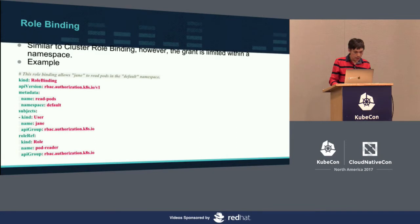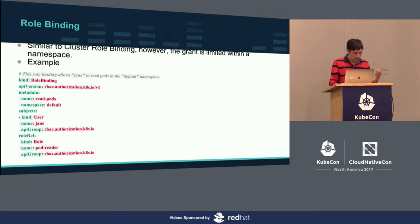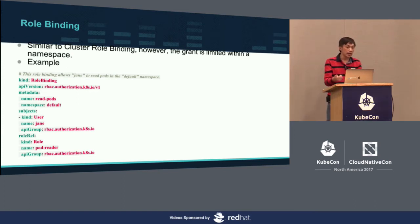Now for RoleBinding: this time I'm granting permissions to a user called James. This RoleBinding is part of the namespace—I've specified namespace default. The subject is user James, which means he can read the pods. That's RBAC giving granular control over who can do what.